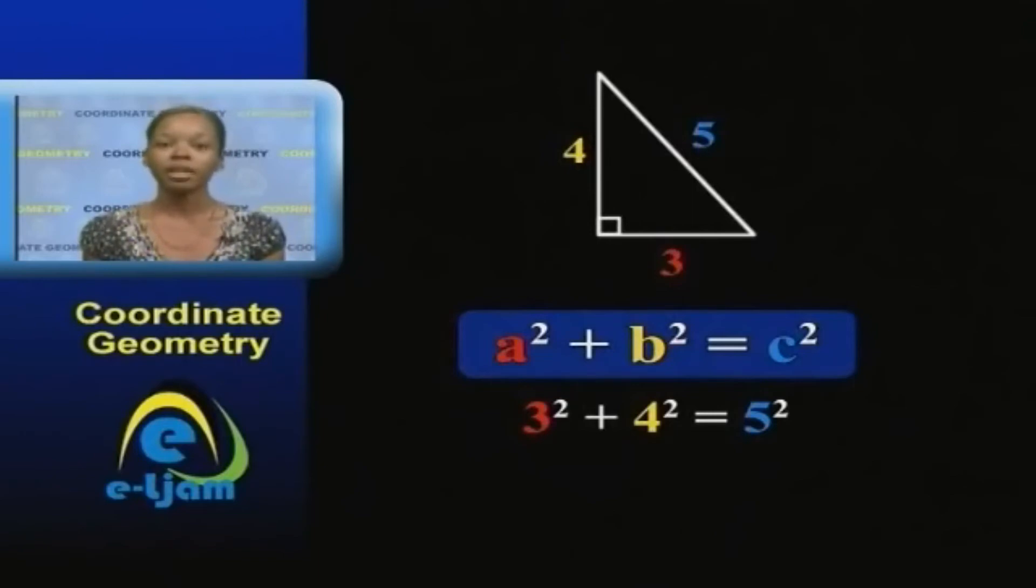5 squared equals 25, and 3 squared plus 4 squared equals 9 plus 16, which is also equal to 25. This proves that Pythagoras' theorem is true.